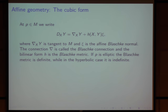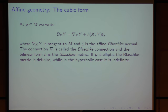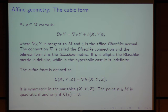We can also see the Darboux directions in terms of affine geometry. At any point, you can write this basic equation where d is the derivative of the space, delta is the affine Blaschke connection, C is the affine Blaschke normal, and H is the affine Blaschke metric. At the elliptic part of the surface, H is definite; at the hyperbolic part, H is indefinite. The cubic form is given by nabla H — it is symmetric in the three variables. The point is quadratic if and only if the cubic form is zero.